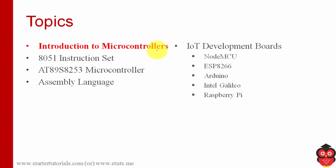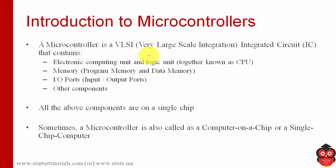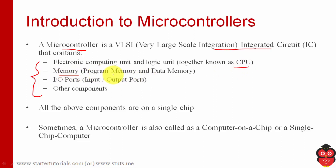Let's start with introduction to microcontroller. A microcontroller is a VLSI integrated circuit — a single chip which contains thousands of components integrated into it. You can find a central processing unit which does computation. You can also find memory, which is divided into two types: program memory, which contains the program, and data memory, where variables and data values used in the program are stored.